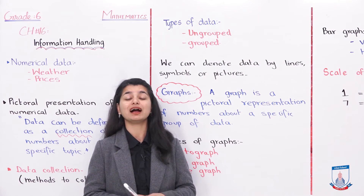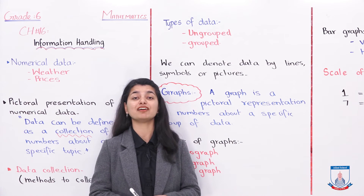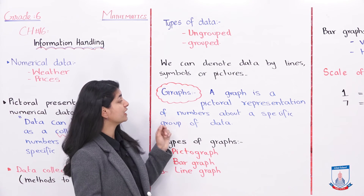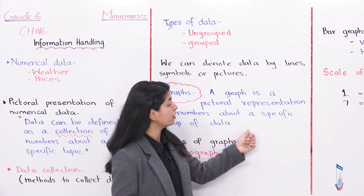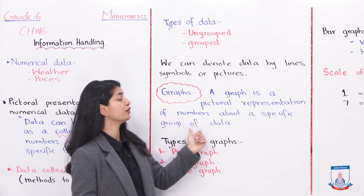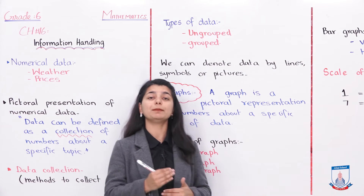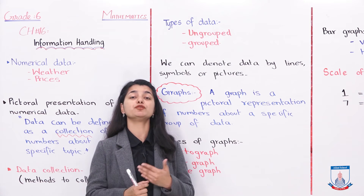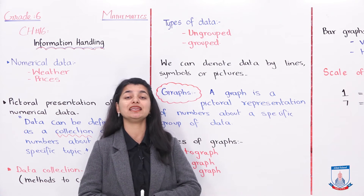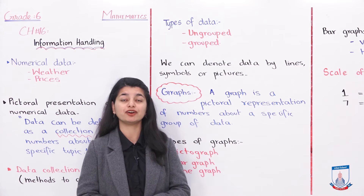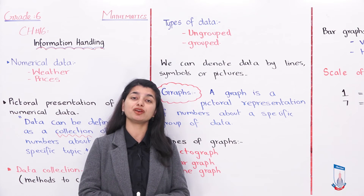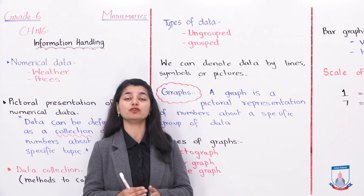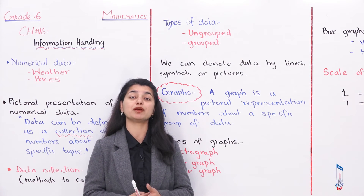The next important concept in this chapter is graphs. What are graphs? A graph is a pictorial representation of numbers about a specific group of data. We use graphs to express a specific group of data as a pictorial representation. You may have seen graphs in earlier classes — we have to understand and work with them in this chapter and answer questions based on them.